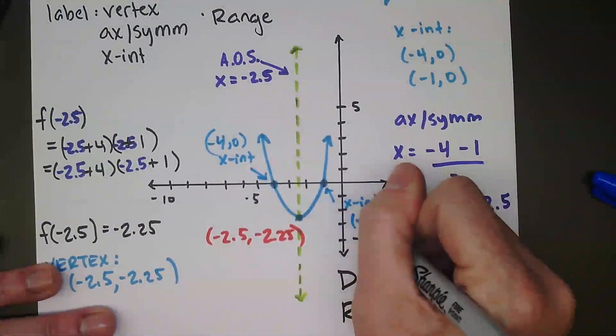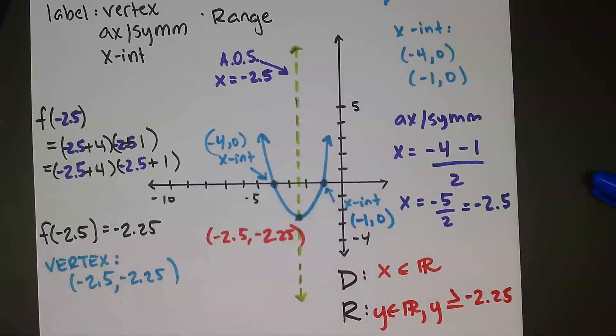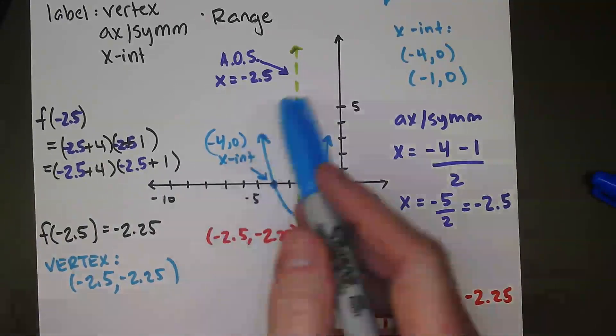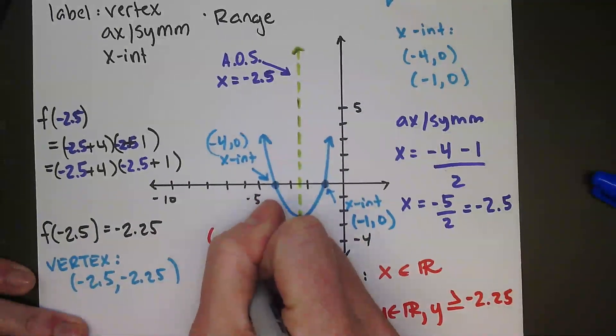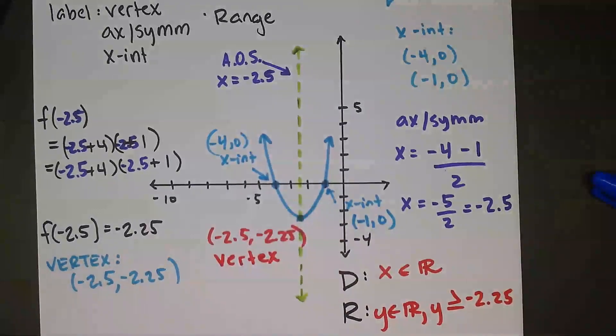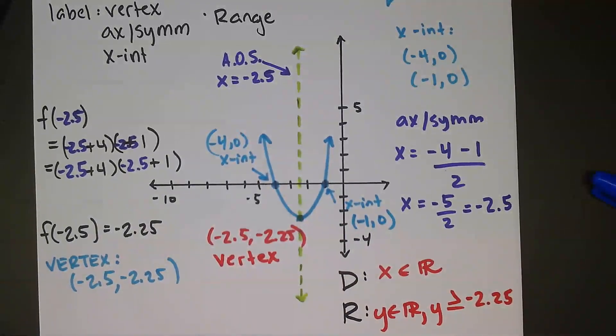This is the x-intercept, negative 1, 0. We got the vertex labeled. We got the axis of symmetry labeled. I'll go ahead and just put vertex on this. All right, I hope that's helpful. Message me anytime with questions.